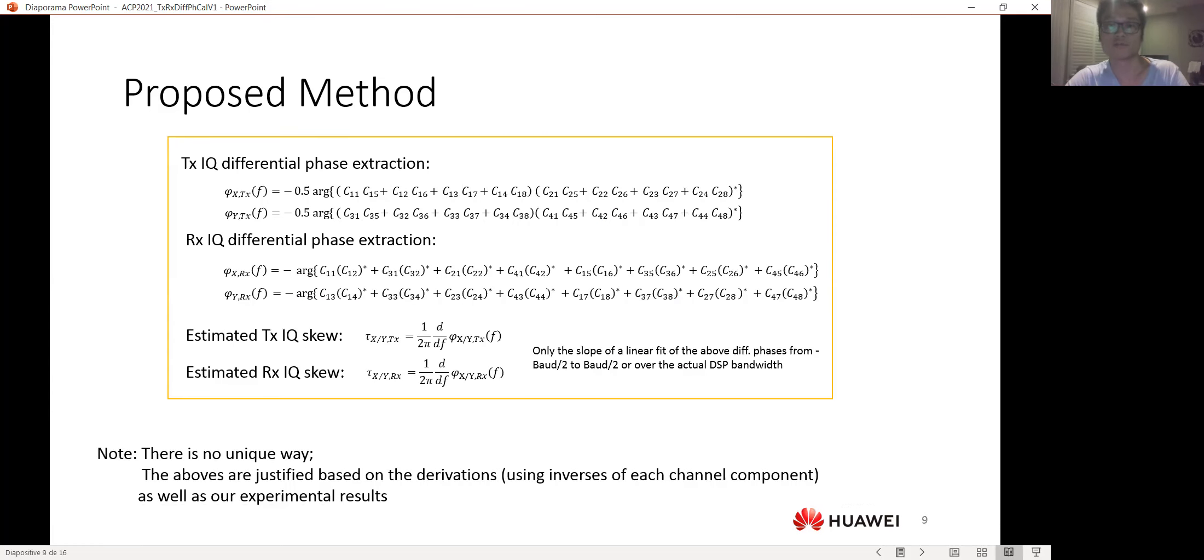Our goal now is to get a combination of these coefficients to estimate transmitter and receiver IQ differential phases. So here shows our method. And to estimate the corresponding skew, we're just doing a linear fit and then obtain the slope of the differential phase. And note that the frequency range will be covering the entire signal or maybe the actual DSP bandwidth. There is no unique way to get these combinations.